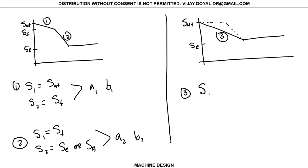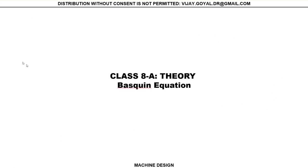For number three, then S1 will be S-u-t, S2 will be S-e or S-n depending on the case. And from here, you can find an a3 and a b3. So this is how you actually handle these treatments for these equations. And that's how we use the Basking equation.